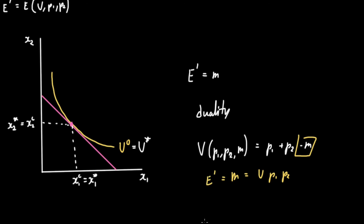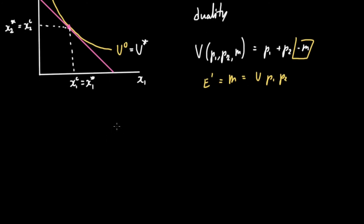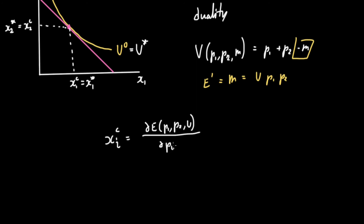From the expenditure function, we can use what we call Shephard's Lemma to find our Hicksian demand. Shephard's Lemma says that the Hicksian demand for good I, X_I^C, equals the partial derivative of our expenditure function E(P1, P2, U) with respect to P_I. So the Hicksian demand for good 1, X1C, equals the partial derivative of E prime with respect to P1. The same applies for the Hicksian demand for good 2 — we just change the 1 to 2.